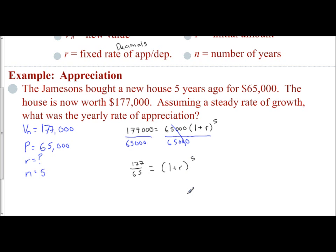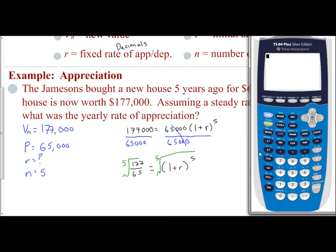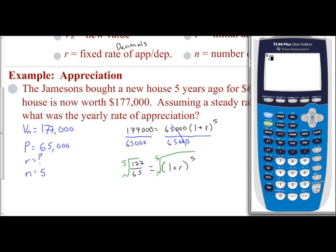To get rid of the fifth power, you're going to take the fifth root of both sides. So we're going right to our calculator. We want to find the fifth root of $177,000 over $65,000. Remember, your roots are located in your math menu. So math, option 5 is the x-root. We want the fifth root, so type in 177,000 divided by 65,000 and hit enter.